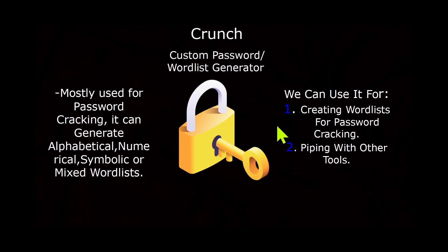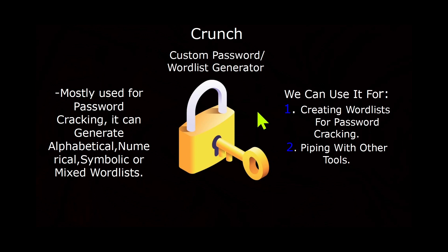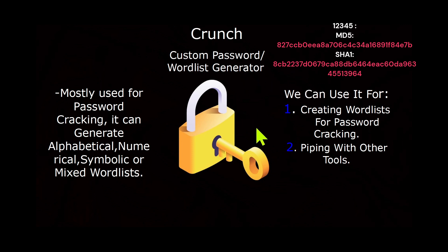We can also pipe Crunch with different tool sets for cracking hashes and encrypted data. For example, one tool is Aircrack, which is used to crack wireless routers, and another tool is Hashcat, where we can crack different kinds of hash data. Hash values are converted from a string — for example, '12345' will look different as a hash. There are many different hash techniques, such as MD5 or SHA-1.